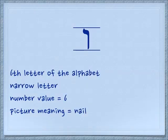The second letter is the vav. It's the sixth letter of the alphabet and it's a narrow letter. It has a number value of six, and its picture meaning is a nail. This is interesting because the vav is the letter used for the conjunction 'and' — it holds things together like a nail.